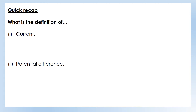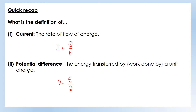So current is the rate of flow of charge. This is often expressed in the equation Q/t. Remember charge should be measured in coulombs, time in seconds, and current in amps. So we could equally say the number of coulombs per second passing through a point — that's a perfectly valid definition of current.